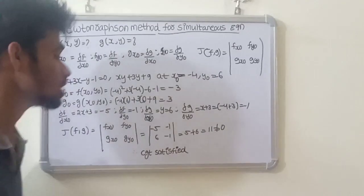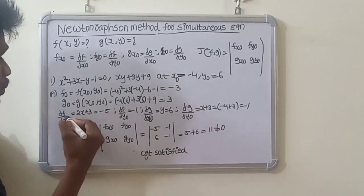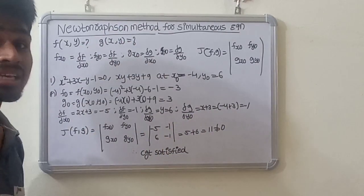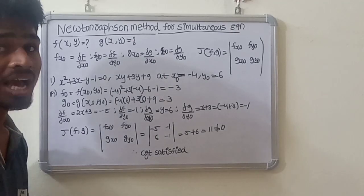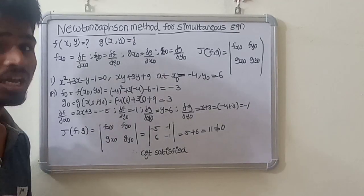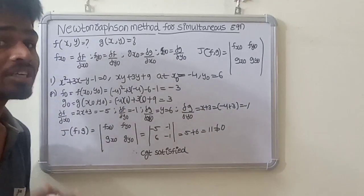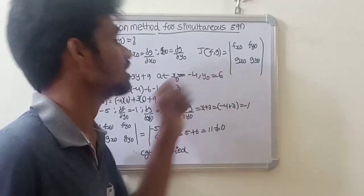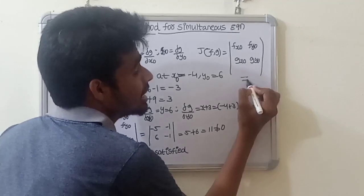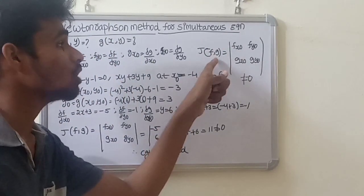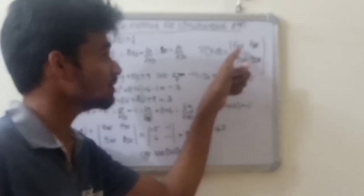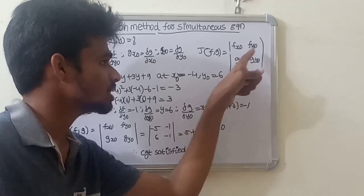Substituting the points x0, y0 gives us rho g by rho x0 and rho g by rho y0. To find the equations here, and to find x1, x2, y1, y2, the convergence property must be satisfied. At least the Jacobian J of f,g must not equal zero. The Jacobian J(f,g) is the determinant: f_x0, f_y0, g_x0, g_y0.